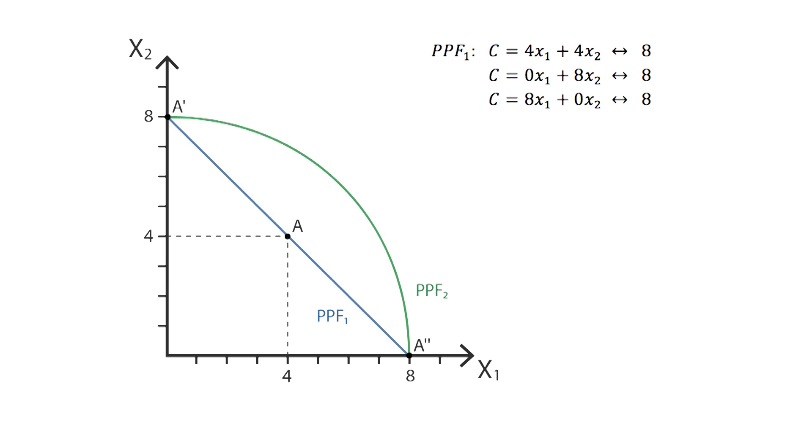If the firm has the second production possibility frontier, its production will have economies of scope. For the same cost C, the firm can keep producing the same amount of good x1, 4 units, while increasing the amount of good x2 produced to 7 units. The firm is producing more for the same cost, or in other words, producing the same amount for a lower cost.